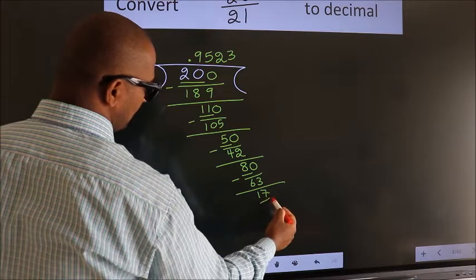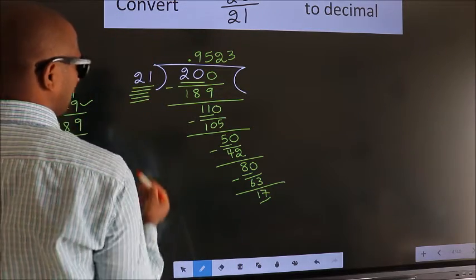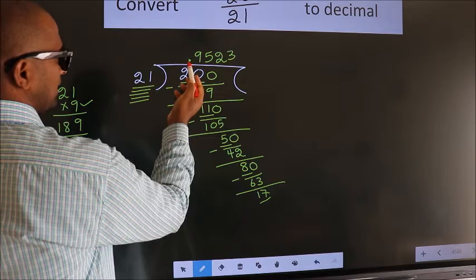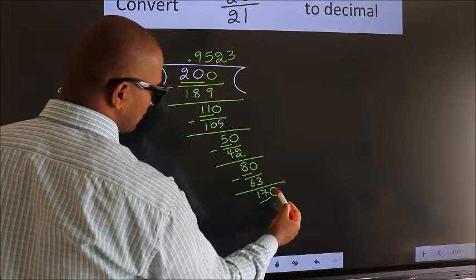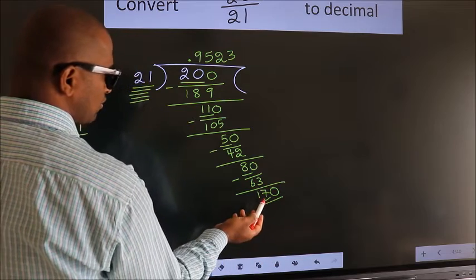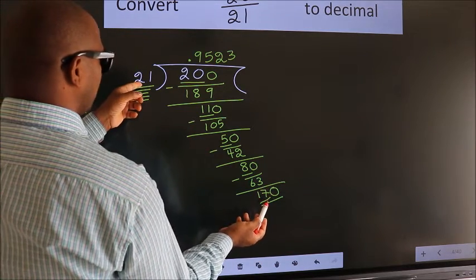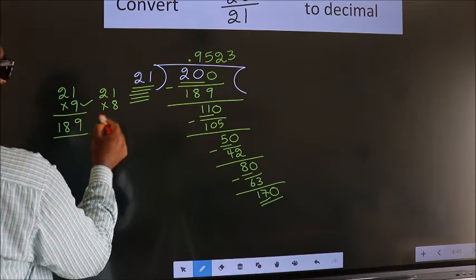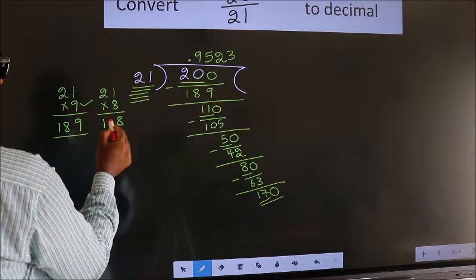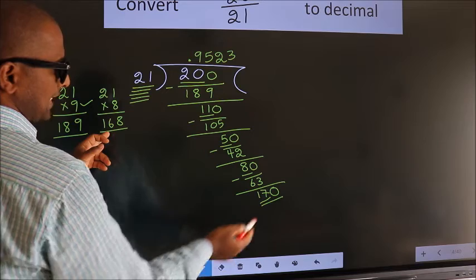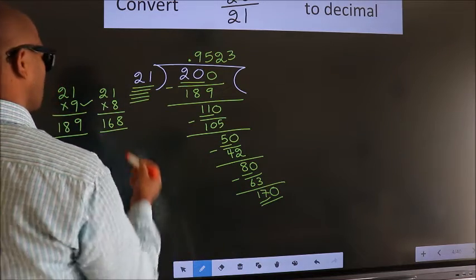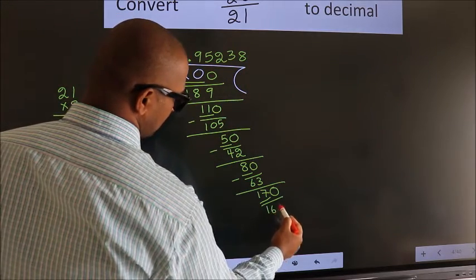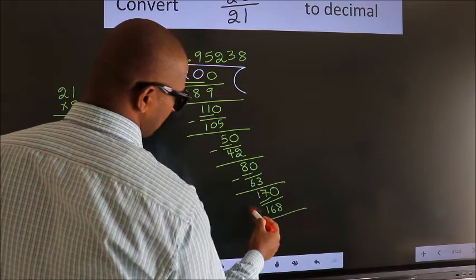We get 17. Here we have 17. Here 21. 17 smaller than 21. And we already have the decimal. So we can directly take 0. So 21 8s, 168.